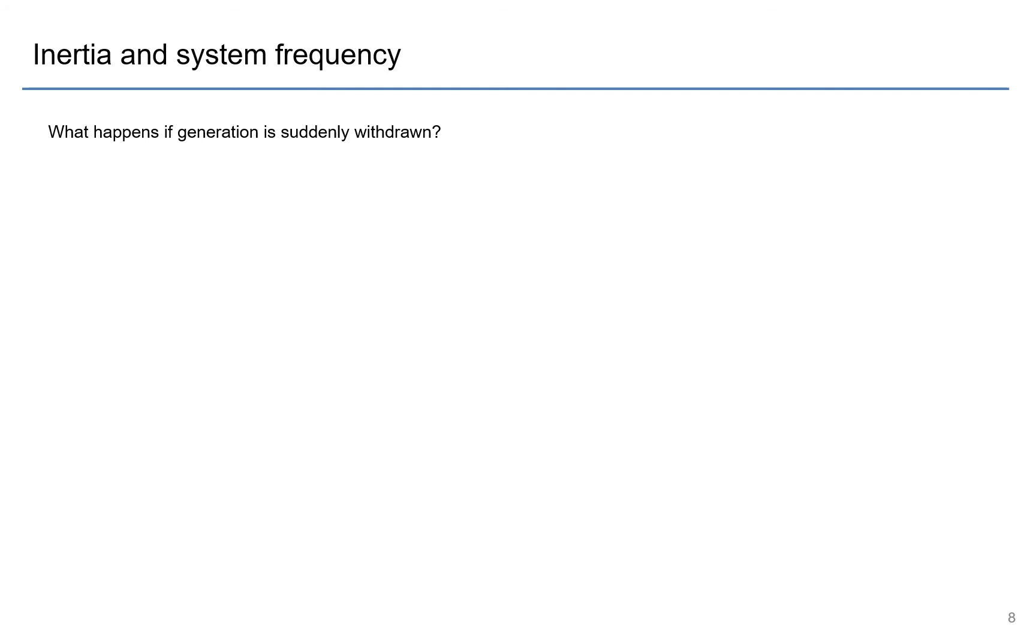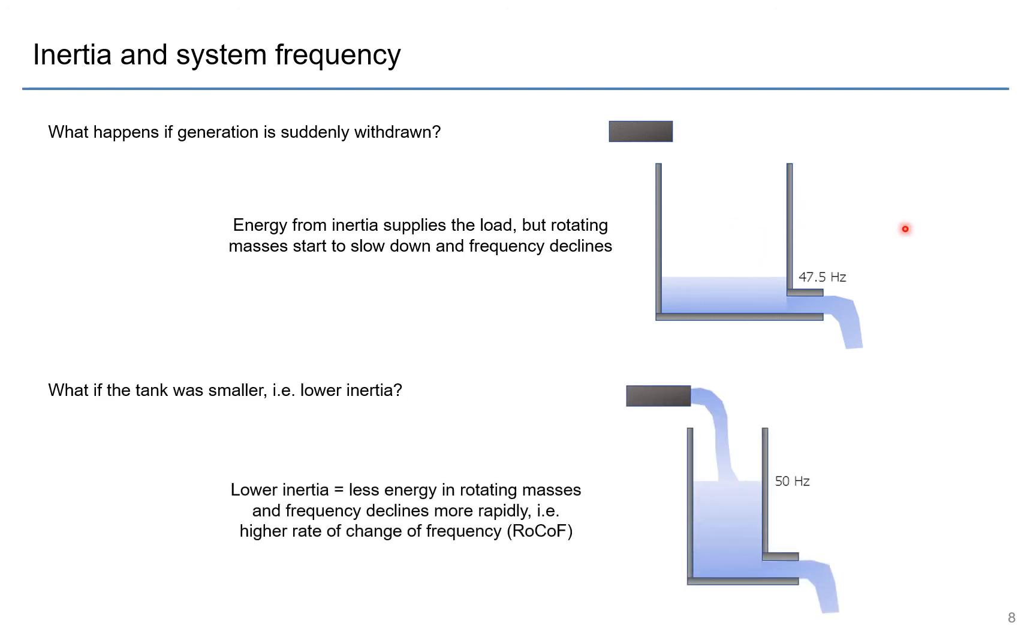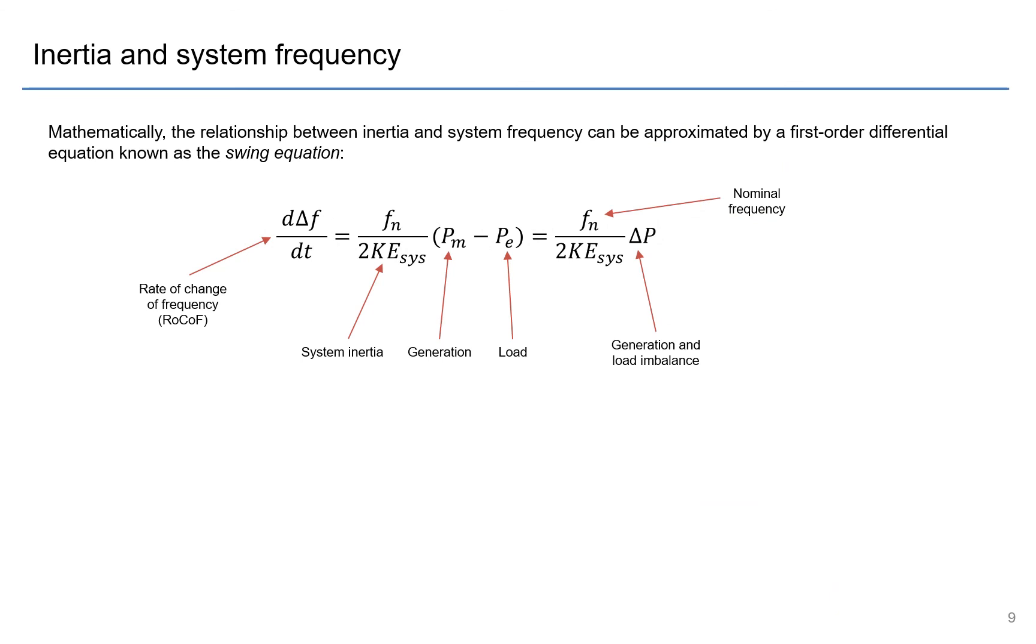So what happens if generation is suddenly withdrawn from the system? You have a situation now where the water stops and the inertia is supplying all the load, and therefore your frequency is declining. But what if the tank was smaller, we had lower inertia? Then the inertia is still supplying the load but the tank is smaller so it drains more quickly, and so you have a faster decline in frequency, so what's called a higher rate of change of frequency, ROCOF.